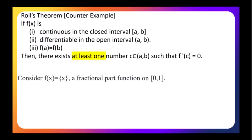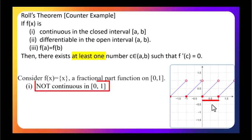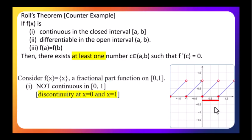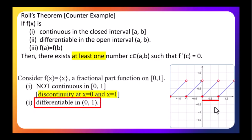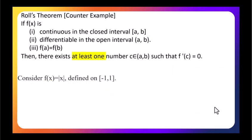Let us see some counter-examples where Rolle's theorem fails. The first example is the fractional part function on the interval [0, 1]. The function is not continuous on this interval because it is discontinuous at x equals 0 and x equals 1, since the left-hand limit and right-hand limit at these points are not equal. The second and third conditions are true — the function is differentiable on the open interval and f(0) equals f(1) — but since the first condition fails, Rolle's theorem does not apply.